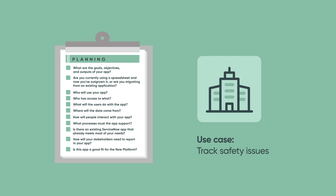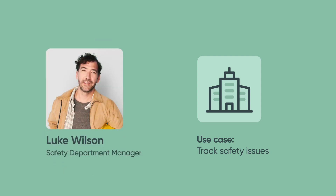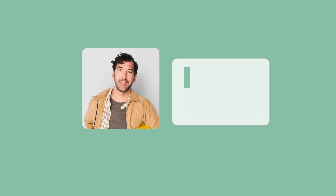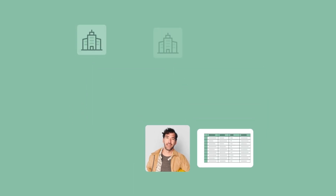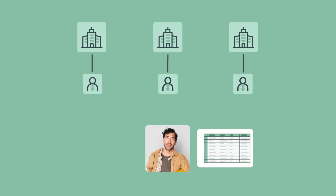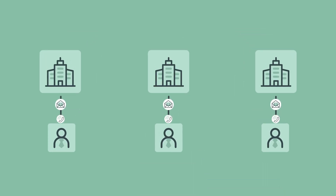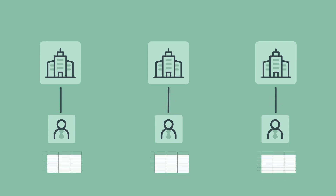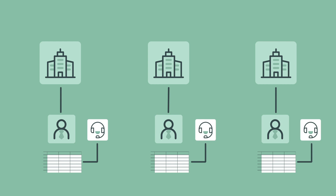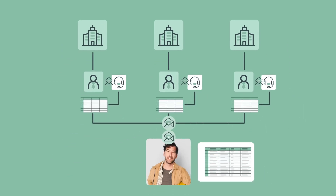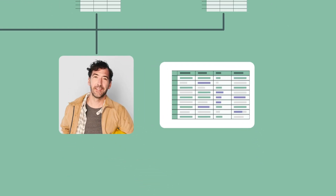Let's dive a little deeper into the situation. Luke Wilson is a safety department manager for a furniture manufacturer. Your company may not build furniture or track safety issues, but you'll find many of Luke's challenges familiar as they apply to most organizations. Luke currently uses spreadsheets to manage the safety issues at his company's manufacturing facilities. Each plant safety supervisor receives safety issues by email and phone calls. They enter their issues into a spreadsheet, assign a technician to address each one, and notify that technician by email. Each week, all supervisors email their respective spreadsheets to Luke. Luke then spends several hours sanitizing and merging spreadsheets to do some basic reporting.